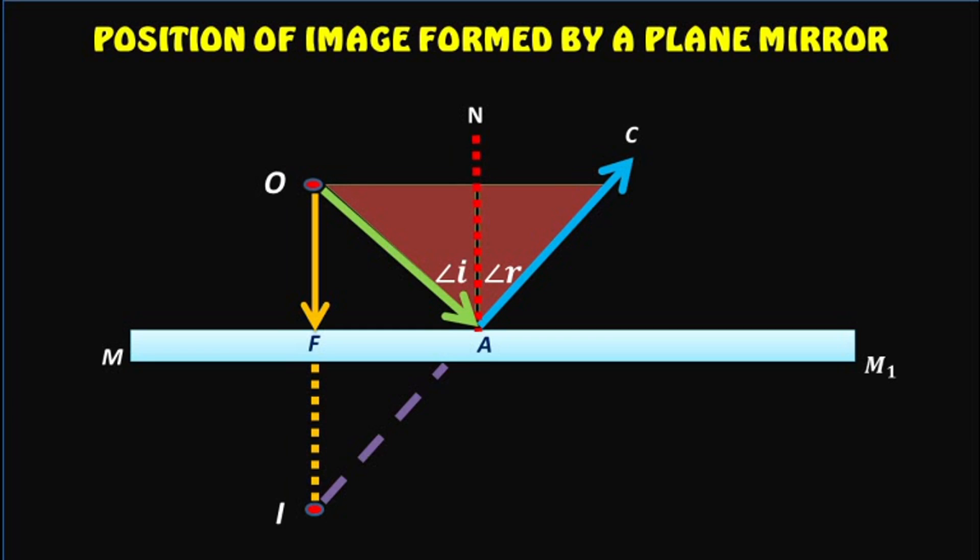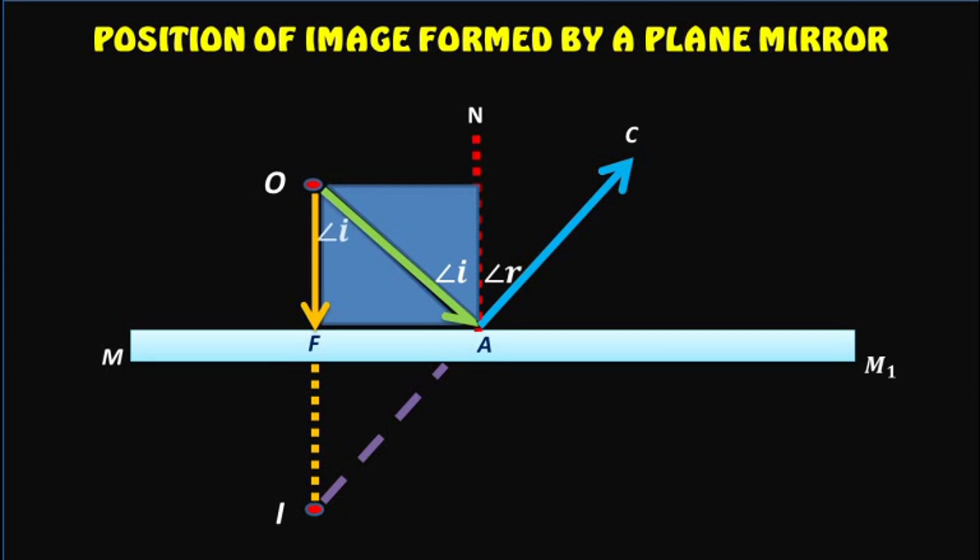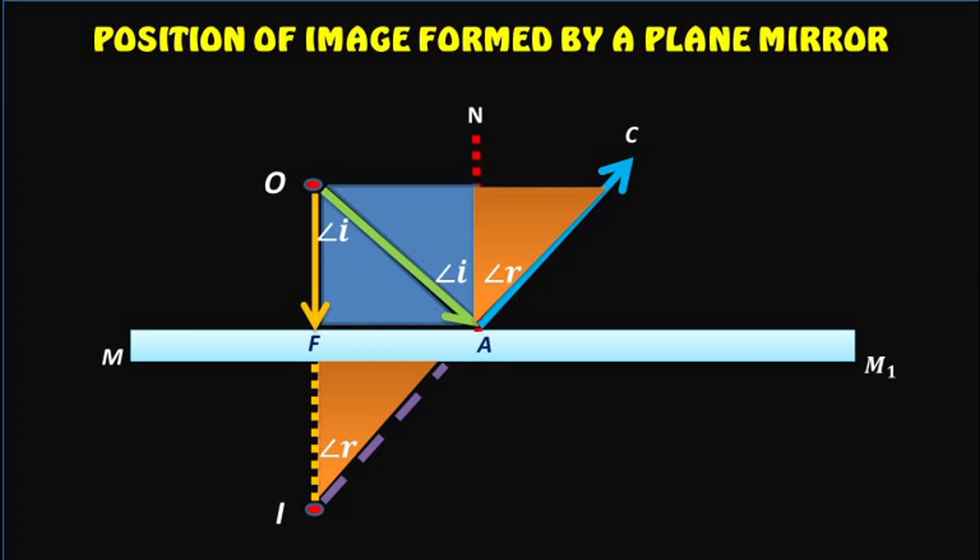But angle OAN is equal to angle AOF because they are alternate angles, and angle CAN is equal to angle AIF because they are corresponding angles. Therefore, angle AOF is equal to angle AIF.